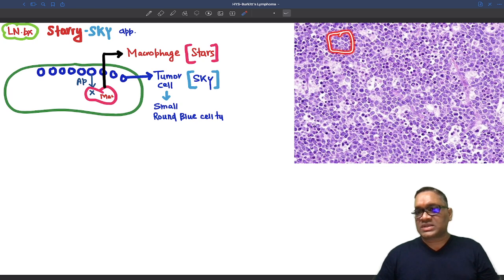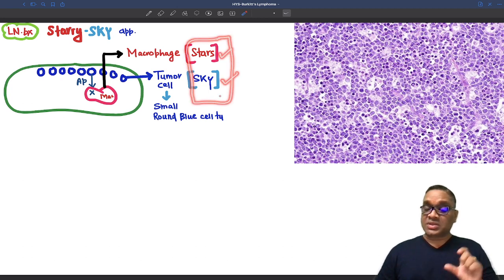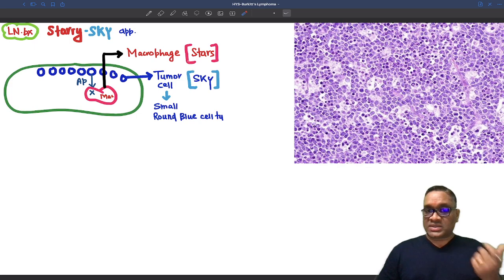In the background, these tumor cells, you can see these are all small round blue cell tumors forming the sky. This overall appearance is called a starry sky appearance. So remember, starry sky appearance is seen in Burkitt lymphoma. What is a star? Macrophage. What is a sky? Tumor cells.